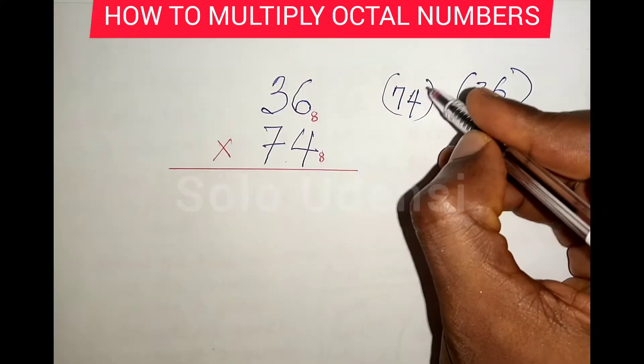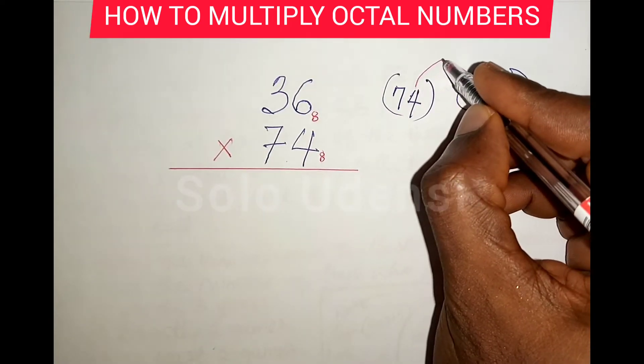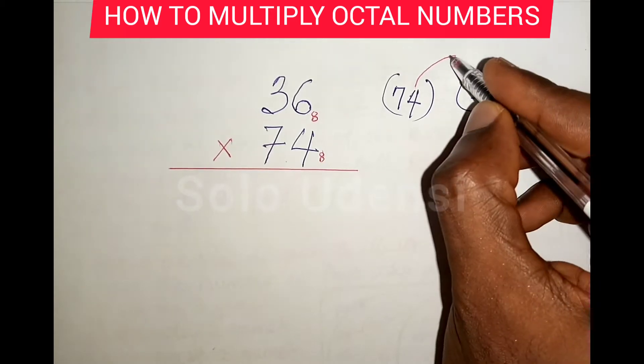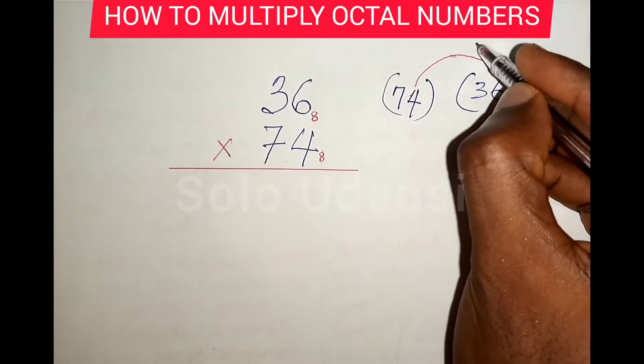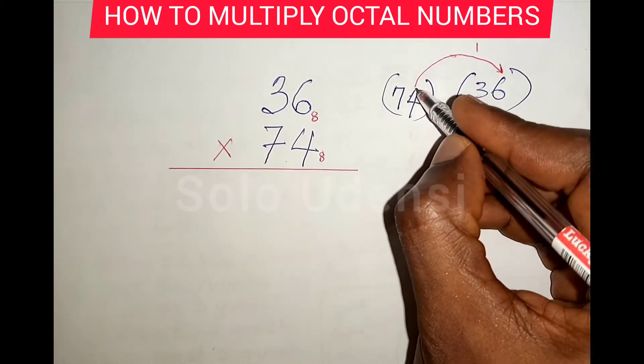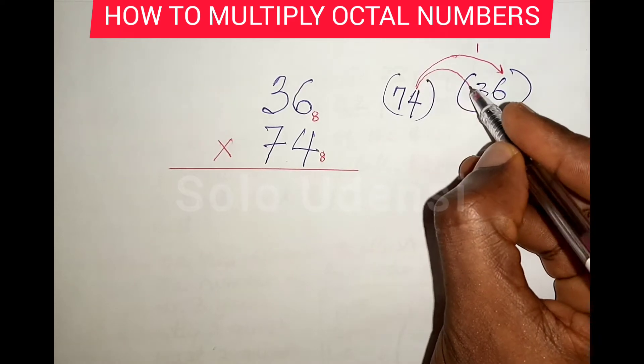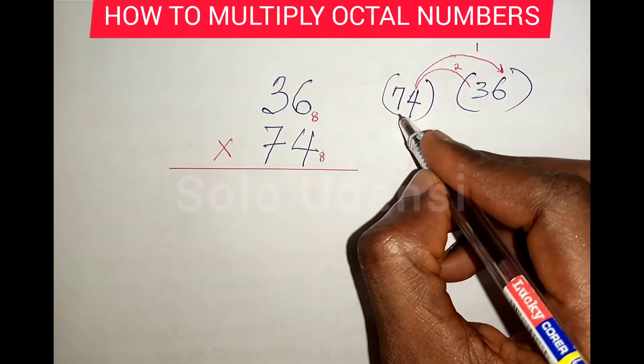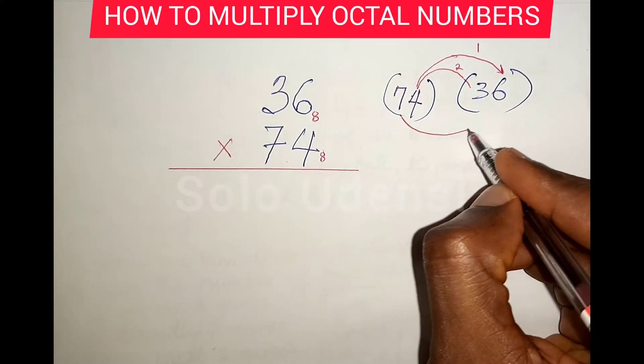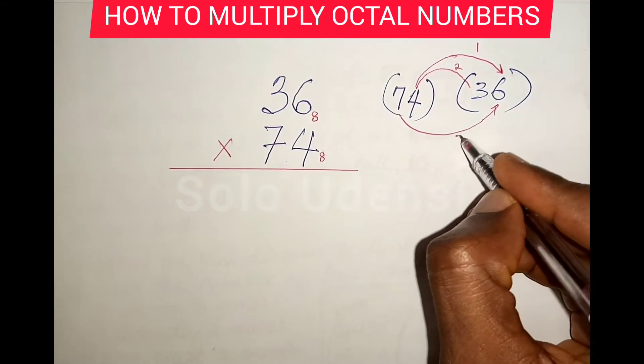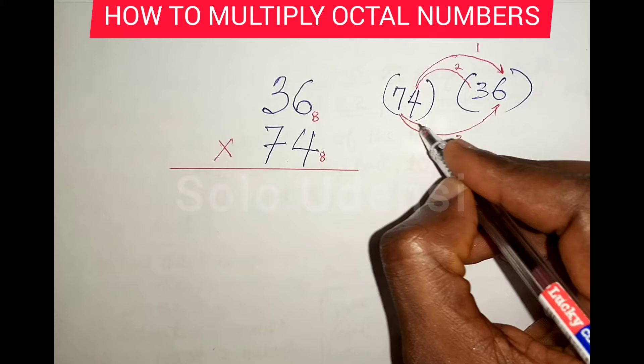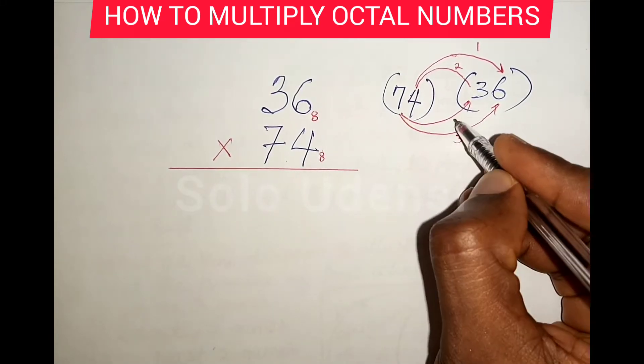So what will happen is that four will first multiply six, then four will multiply three. Then seven will multiply six, and then seven will multiply three.